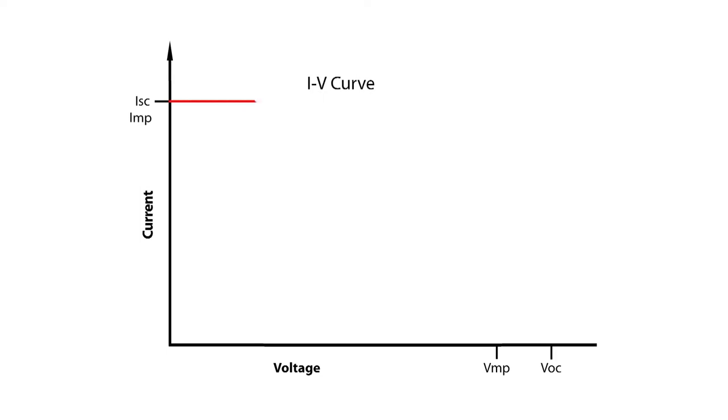The IV curve of a string of PV modules represents all the current and voltage values in which the string could be operated, or loaded, at the existing irradiance and temperature conditions.